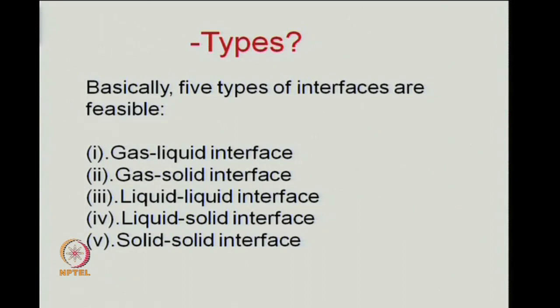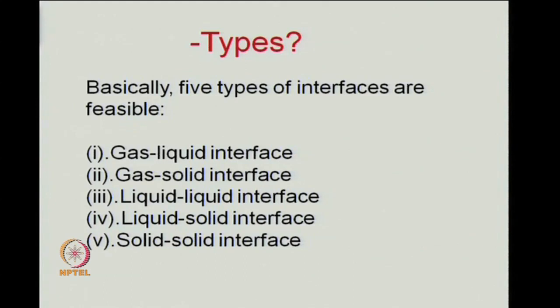When we think about the types of interfaces we may come across, basically five types are feasible: a gas-liquid interface, a gas-solid interface, a liquid-liquid interface, a liquid-solid interface and a solid-solid interface. Two gas phases could not possibly have a stable interface because intermingling of gases would naturally occur.